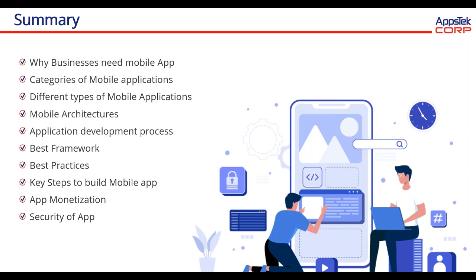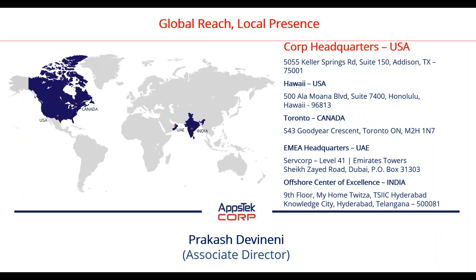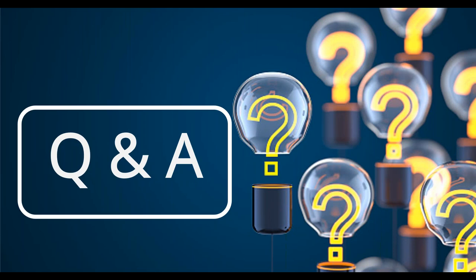Best practices to follow from UX/UI design through all the development practices were outlined, but most important is the security of the application — that has to be taken care of from the beginning itself. Key steps to build a mobile app: market, user, and product considerations are key focus areas. App monetization — a few options on how to monetize your app were covered. Security of the app was covered briefly, but security has to be the highest priority in developing the app. With this, we come to the end of the topics. Please type your questions in the chat window and I will be answering the questions, or if we are not able to answer, I will send the response via email.